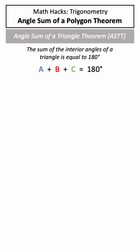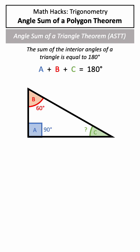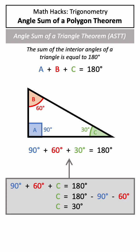This theorem builds on the angle sum of a triangle theorem, which states that all the interior angles of a triangle add up to 180 degrees. And we can use this formula to solve for unknown angles, as shown here.